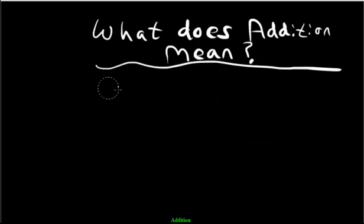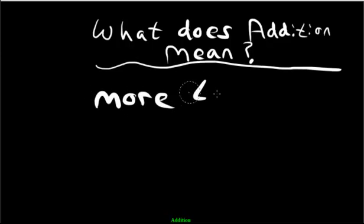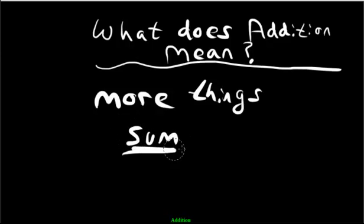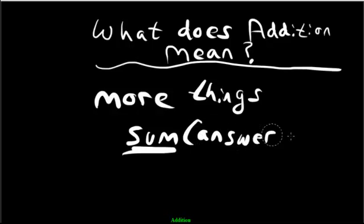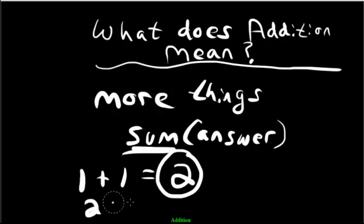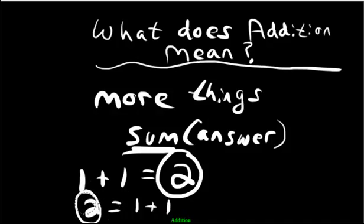So what does addition mean? Addition means you're adding more things. Anytime you're adding more things to something — more chocolates, more chips, more pizzas — anytime you're adding more of something, you have an addition problem. And you're going to often see this word in addition: the sum. The sum is just the answer to an addition problem. So if I have 1 plus 1 equals 2, then 2 is going to be the sum because it's the answer. Likewise, I can also say 2 equals 1 plus 1 — the answer is still 2. It doesn't matter if it's on the right side or the left side.